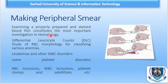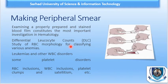Examining a properly prepared and stained blood film constitutes the most important investigation in hematology, and these investigations are very helpful for the diagnosis of any disease. First, we perform the peripheral smear for differential leukocyte count, simply known as DLC. Then we perform it for the general assessment and verification of various cell counts, and similarly a study of RBC morphology for classifying various anemias like microcytic, macrocytic, or hemolytic anemias. We also study WBC morphology for diagnosing leukemias using the FAB classification like M1, M2.